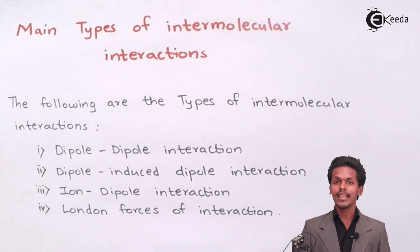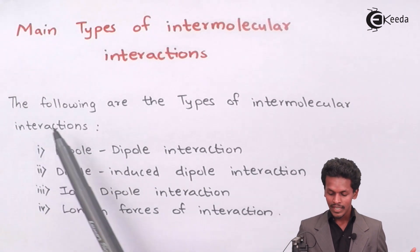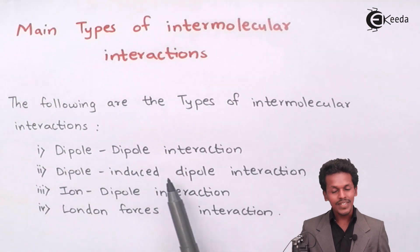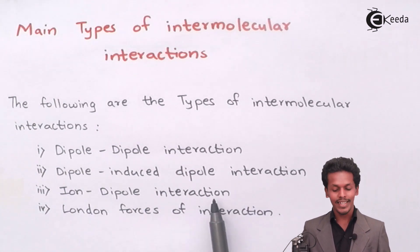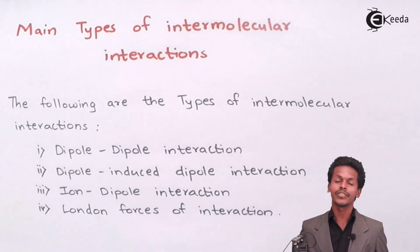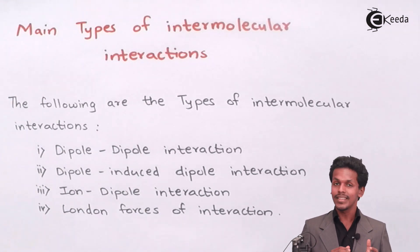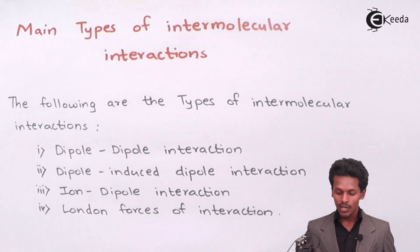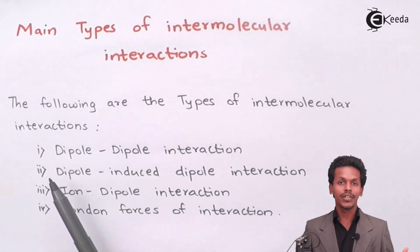They are divided into basically four parts: Dipole-Dipole Interaction, Dipole-Induced Dipole Interaction, Ion-Dipole Interaction and London Force of Interaction. Let me give you a small detail of each one, but the dedicated lecture for each will be in the next videos. Let us start with a brief introduction.